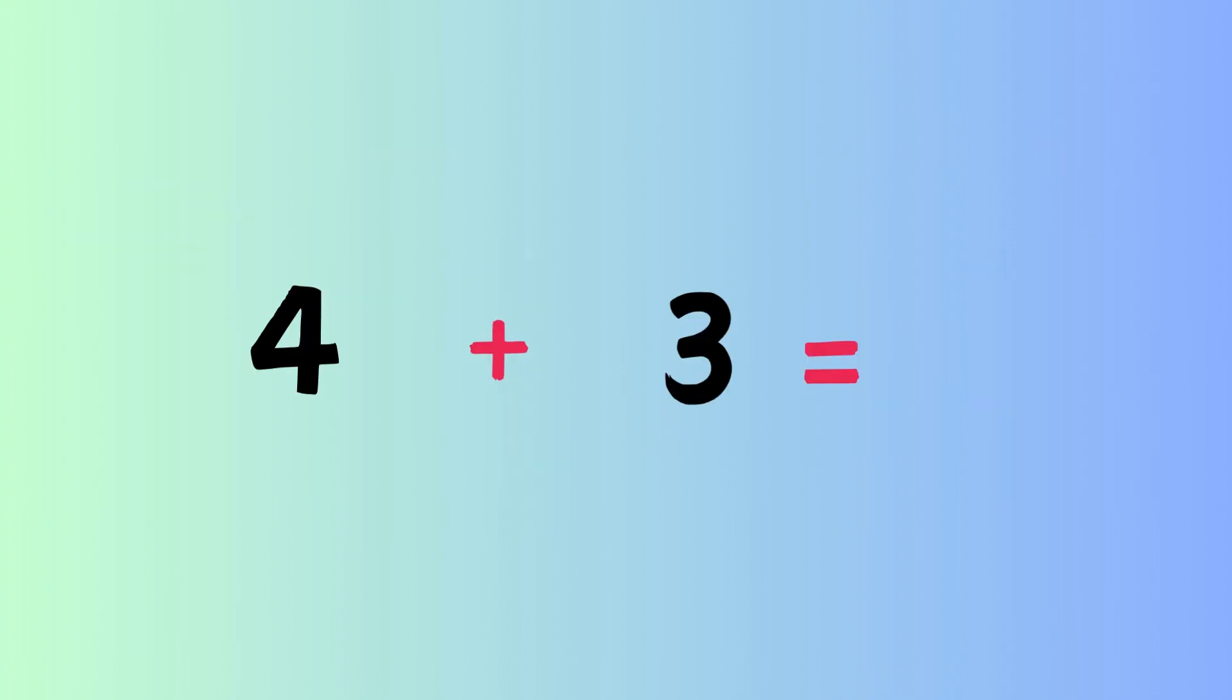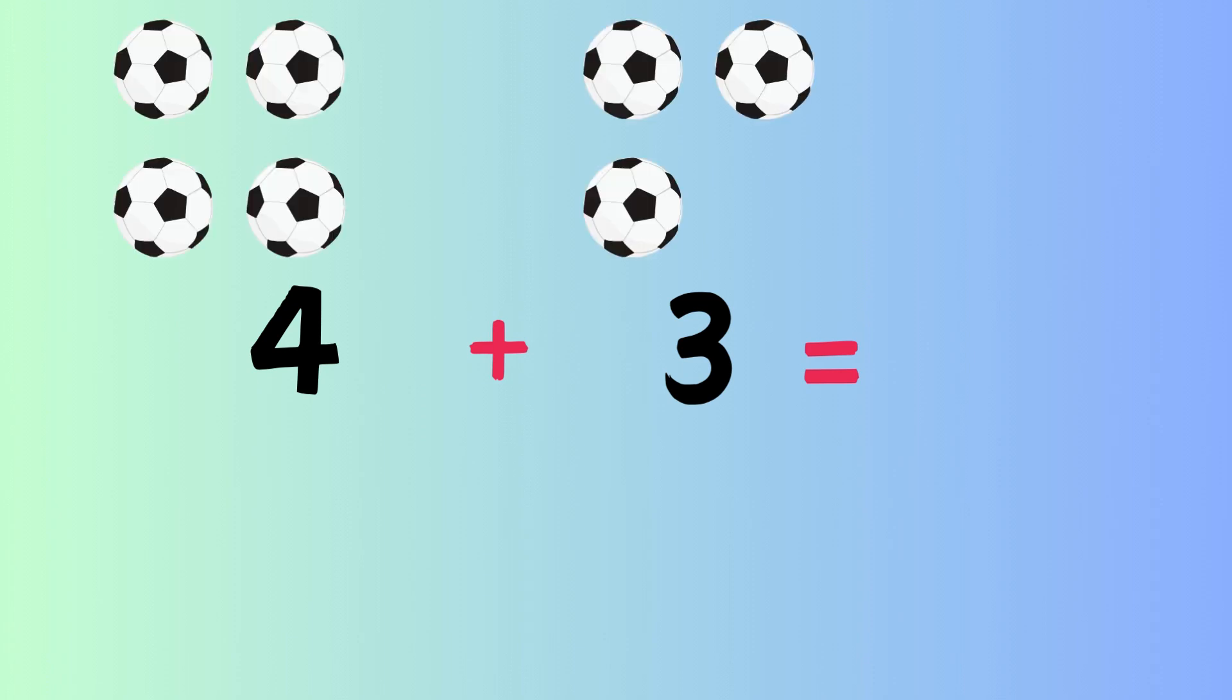How much is 4 plus 3? So we have 4 balloons plus 3 balloons. 1, 2, 3, 4, 5, 6, 7. So 4 plus 3 is equal to 7.